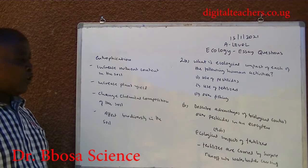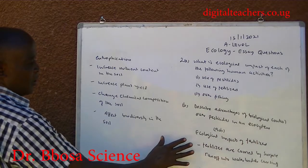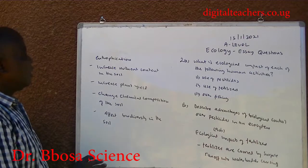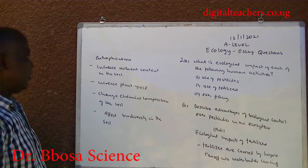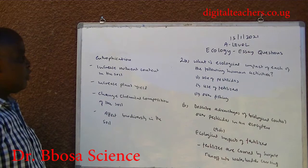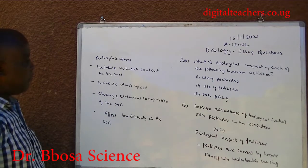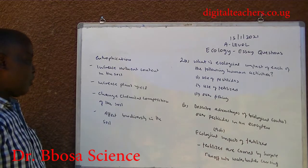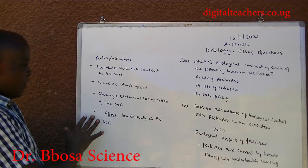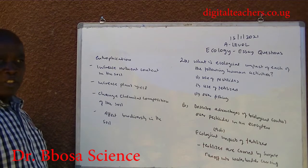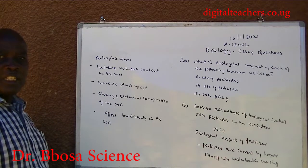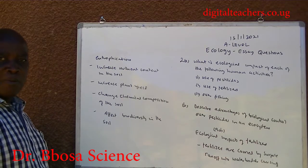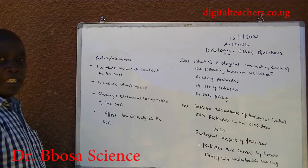A. Roman 2. Ecological impact of fertilizers. Fertilizers are carried by surface runoff into water bodies, causing eutrophication. They increase nutrient content of the soil and increase plant yield. They change chemical composition of the soil, affect biodiversity of the soil, may increase the population of some organisms and reduce the population of other organisms.